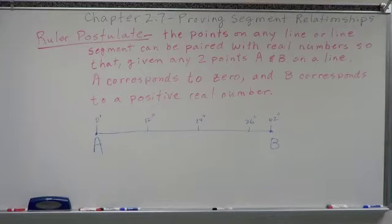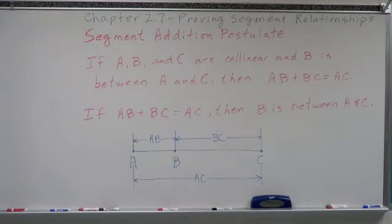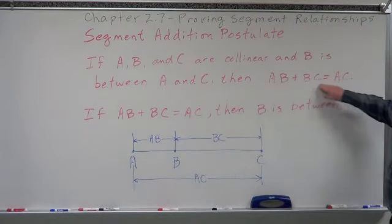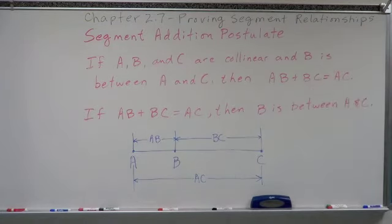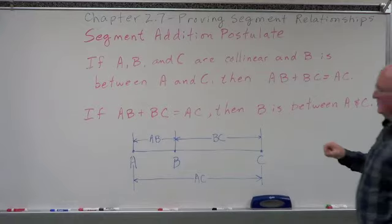The other postulate we need to look at is the Segment Addition Postulate. We've already talked about this some time ago in chapter one. Basically it states if points A, B, and C are collinear and B is between A and C, then the measurement of segment AB plus the measurement of segment BC equals the measure of segment AC.